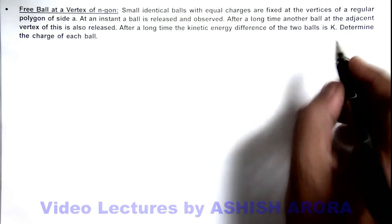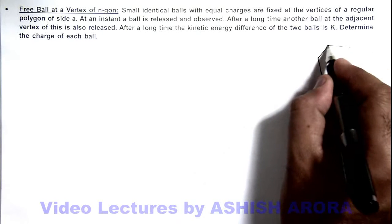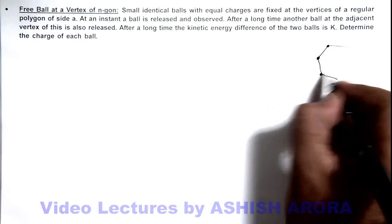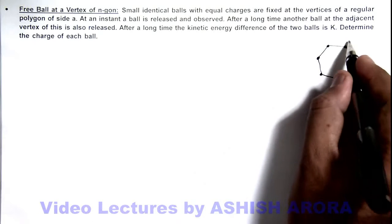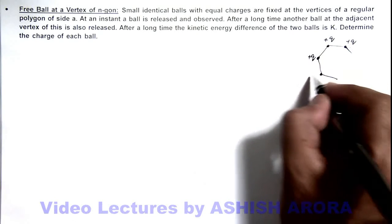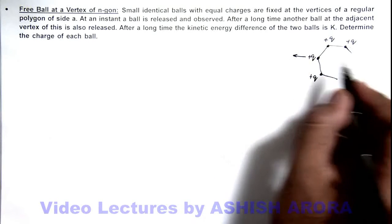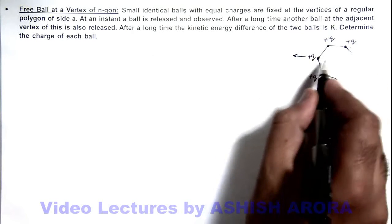Here if we just analyze, this is n-gon and these are balls placed on the vertices of this n-gon, and each ball is having a charge of plus q. In this situation if this ball is released it'll be repelled by other balls and move away.